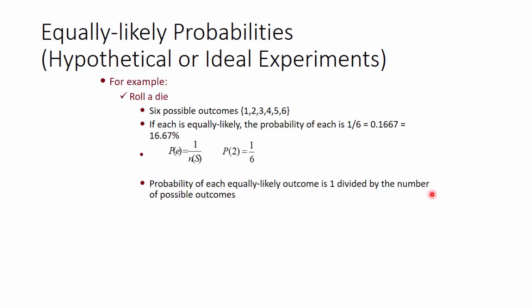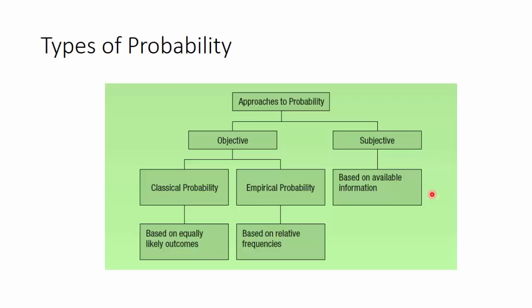When assigning probabilities, there are different types and ways by which we could assign probabilities. Here's a small schematic understanding. Probability could be approached in two ways: an objective way and a subjective way.